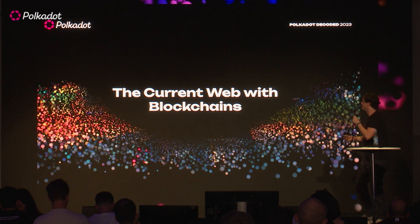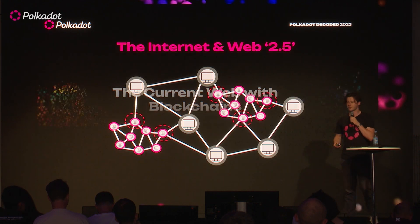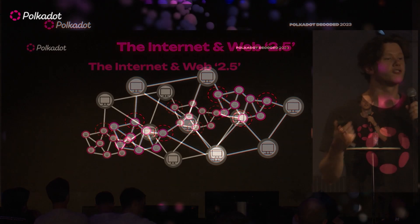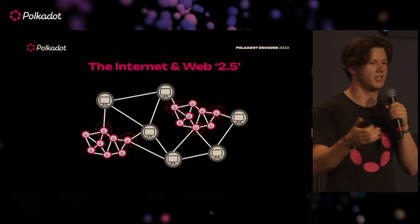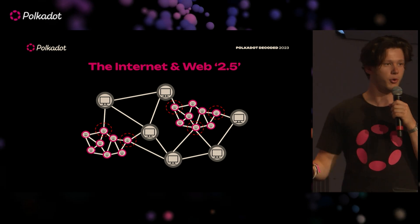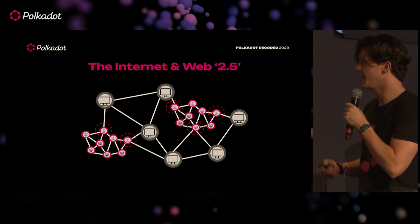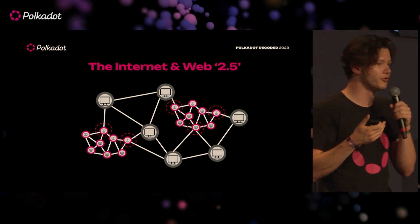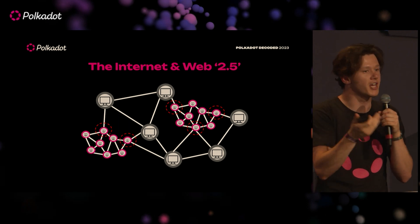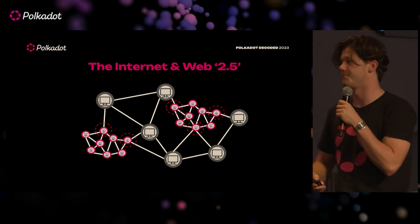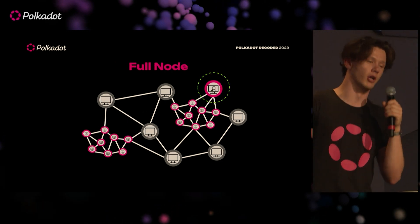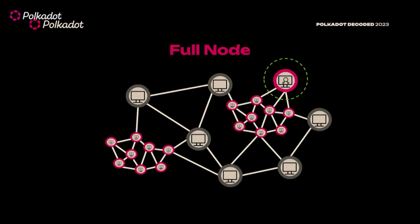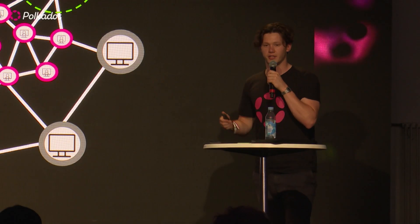However, the current web with blockchains has a few problems. First, when we interact, we only interact with a limited set of participants in the network — again a single point of failure and easily censored. In addition, we are not running any software on our devices to verify whether the data we received is actually what we requested. A solution could be to run a full node — simply put, the Polkadot software — where we join the network, talk to all nodes, and have the information to verify everything.